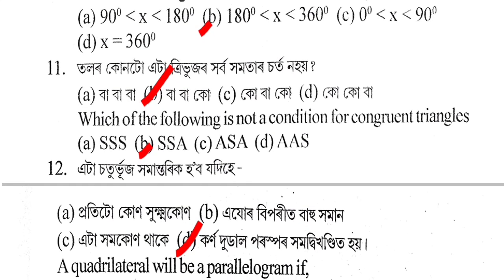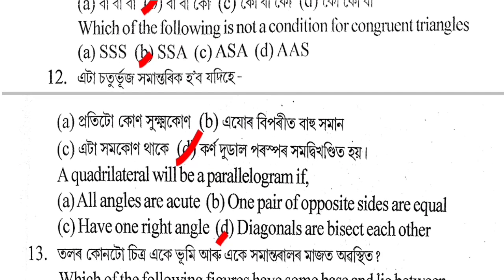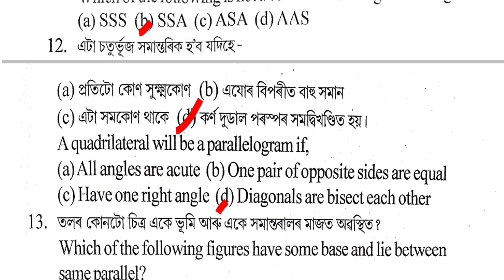Next question: Which of the following is NOT a condition for congruent triangles? The correct answer is Option B: SSA. Two triangles are congruent if corresponding sides and included angles are equal.